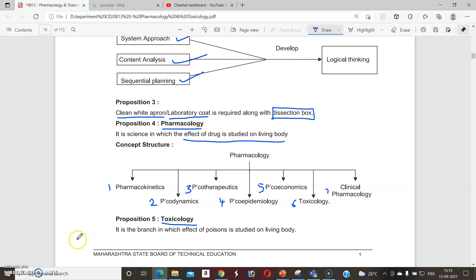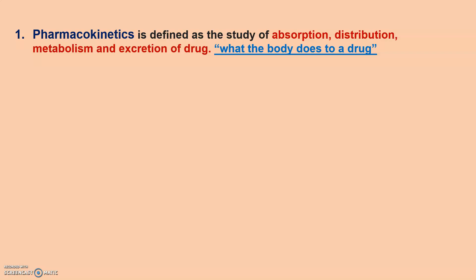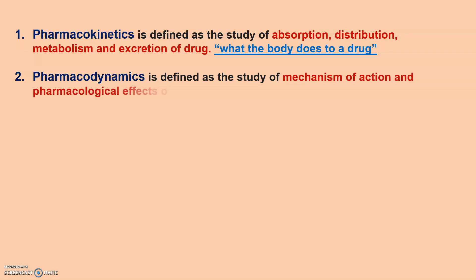The first branch, pharmacokinetics, is the study of absorption, distribution, metabolism, and excretion of drugs — in short, what the body does to a drug. Pharmacodynamics is related to absorption, distribution, metabolism, and excretion of drugs and is the study of the mechanism of action and pharmacological effects of drugs.